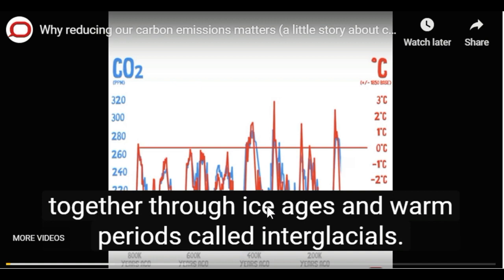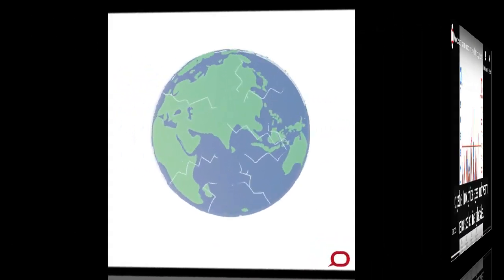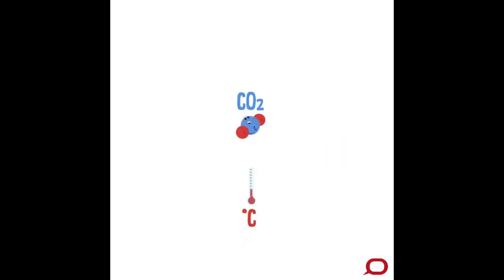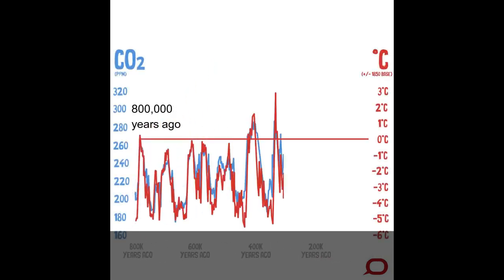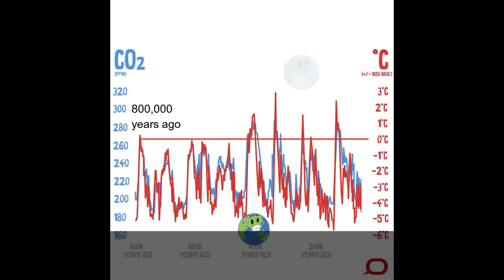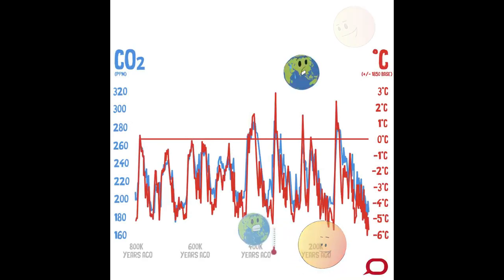Scientists use ice core records from Antarctica to reconstruct prehistoric temperature records, and those same ice layers trapped little bubbles of CO2, which means we can see how they relate over time. Temperature and CO2 have fluctuated together through ice ages and warm periods called interglacials. Slow changes in the Earth's orbit around the Sun initiated the ice ages. CO2 was a natural amplifier, causing the global climate to warm and cool through each cycle.